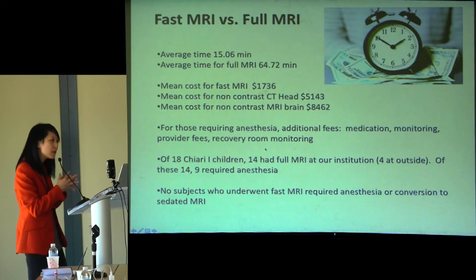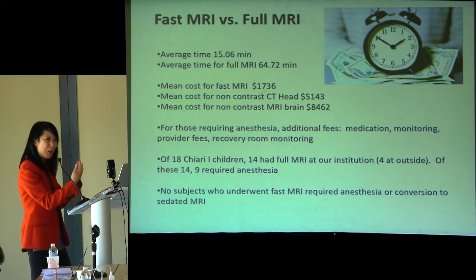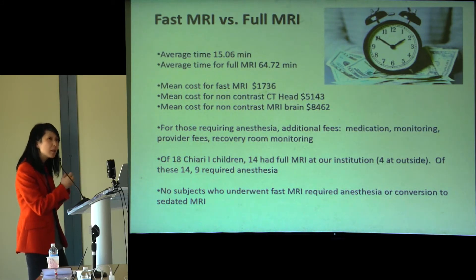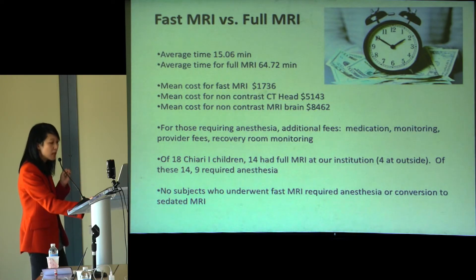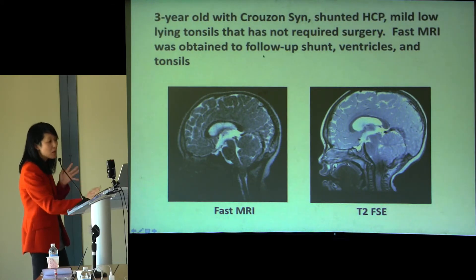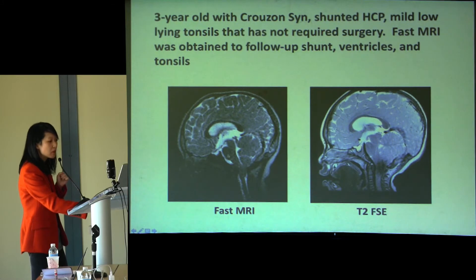We thought this could be something to consider down the line. Initially, our folks were resistant to doing this, but we showed literature demonstrating fast scan for hydrocephalus and shunt failures. We were motivated to publish this to show that we could look for tonsillar anatomy using fast scan, potentially incorporating it into clinical indications so patients are eligible for the cost-effective scan. None of our kids who had fast scan were considered non-diagnostic or had to convert to a full GA study.